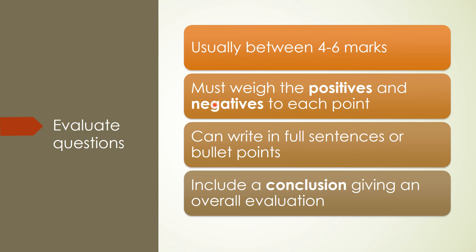If a question asks you to evaluate embryonic and adult stem cells, you need to give positives and negatives for each one — positives and negatives for embryonic, then positives and negatives for adult stem cells. You can write in full sentences or bullet points; you don't have to write essay style or include an intro. You do have to write a conclusion sharing your evaluative skills. Even if you include positives and negatives, the conclusion is usually worth about one mark on a six-marker, so it's worth doing.